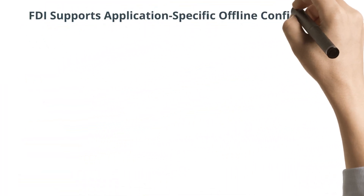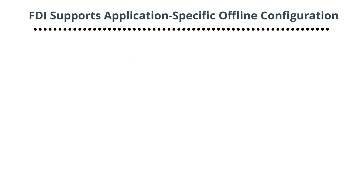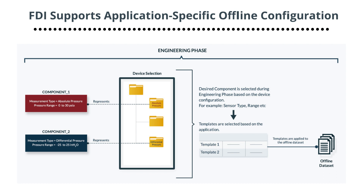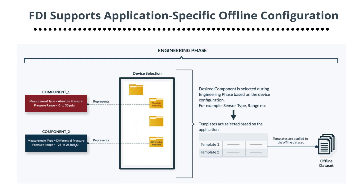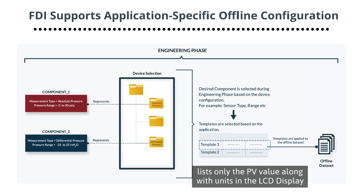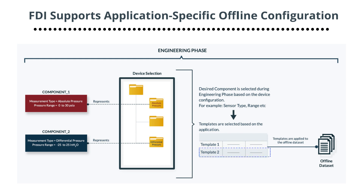Let's dive into the details of how FDI provides benefits with its offline configuration features. During the engineering phase, FDI has implemented standardized templates — sets of device settings recommended by the device supplier to implement a specific instrument application. For example, an LCD display of a transmitter may have two templates. Template 1 lists only the PV value along with units in the LCD display, whereas Template 2 includes values for the parameters that allow the LCD display to show the PV, SV, TV, and QV values at a frequency of 1 second. Having templates predefined in an offline dataset during the engineering phase leads to improved efficiency during the commissioning phase.